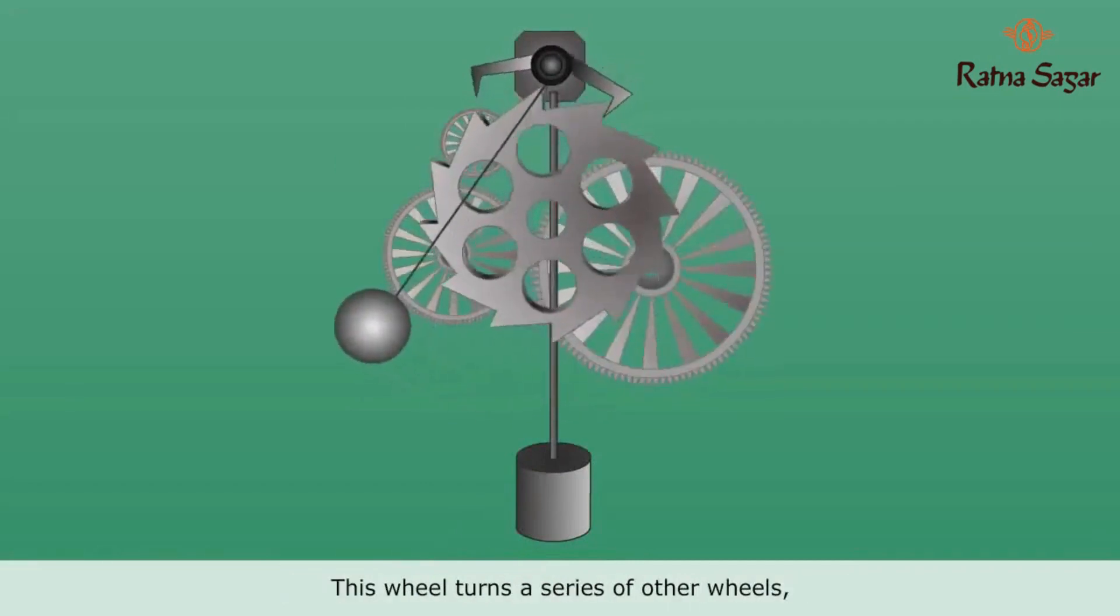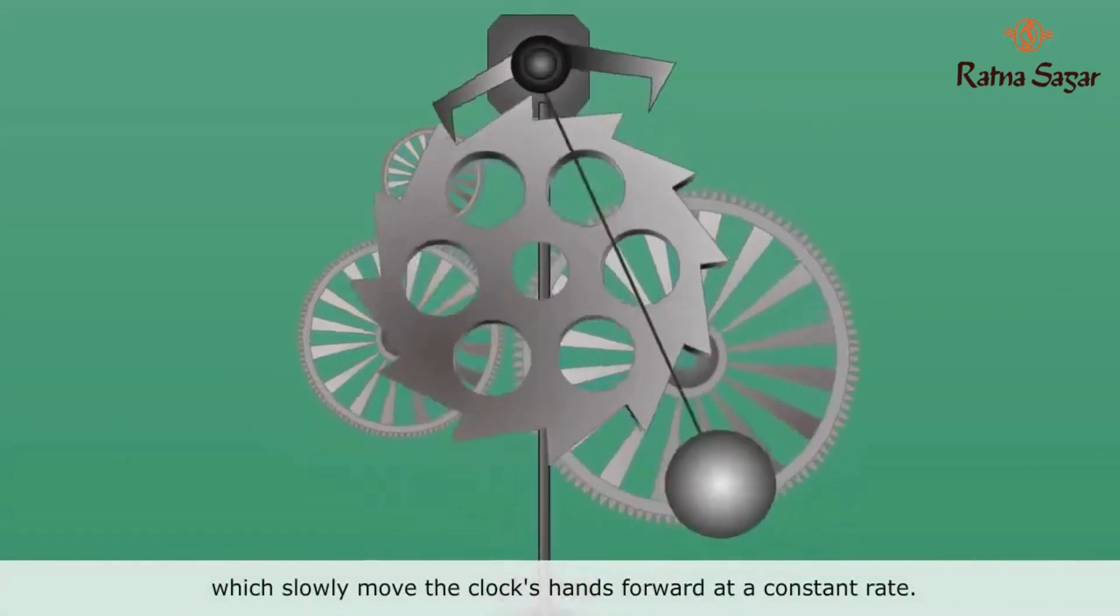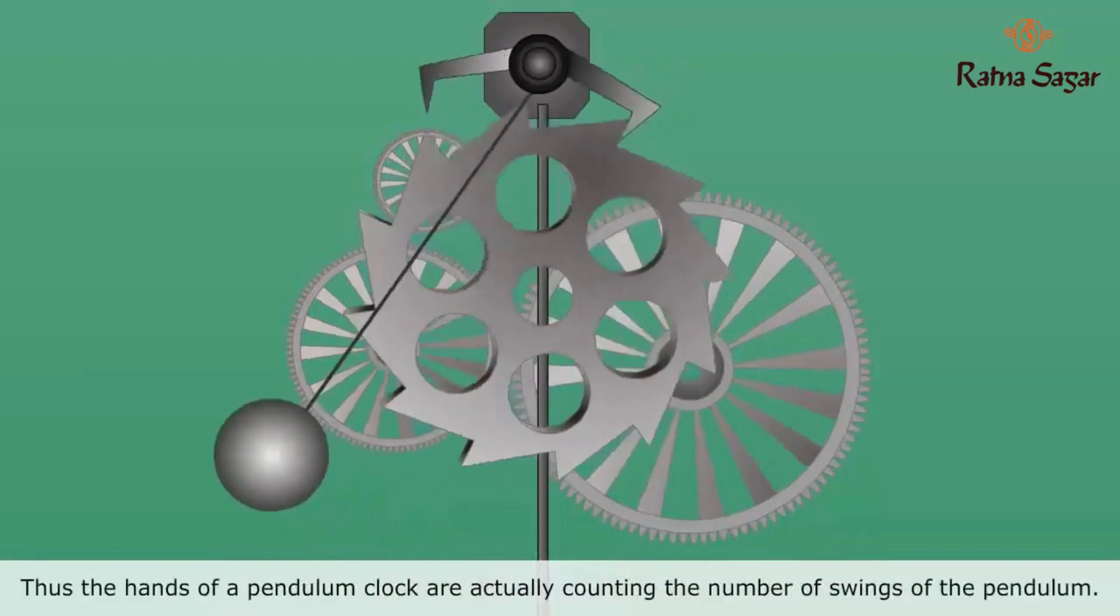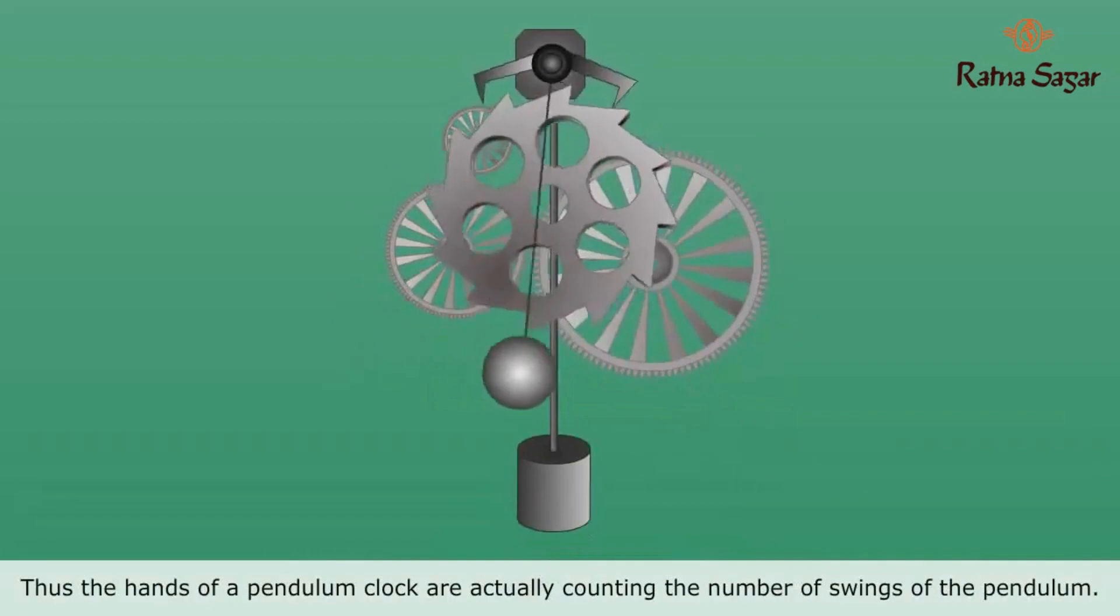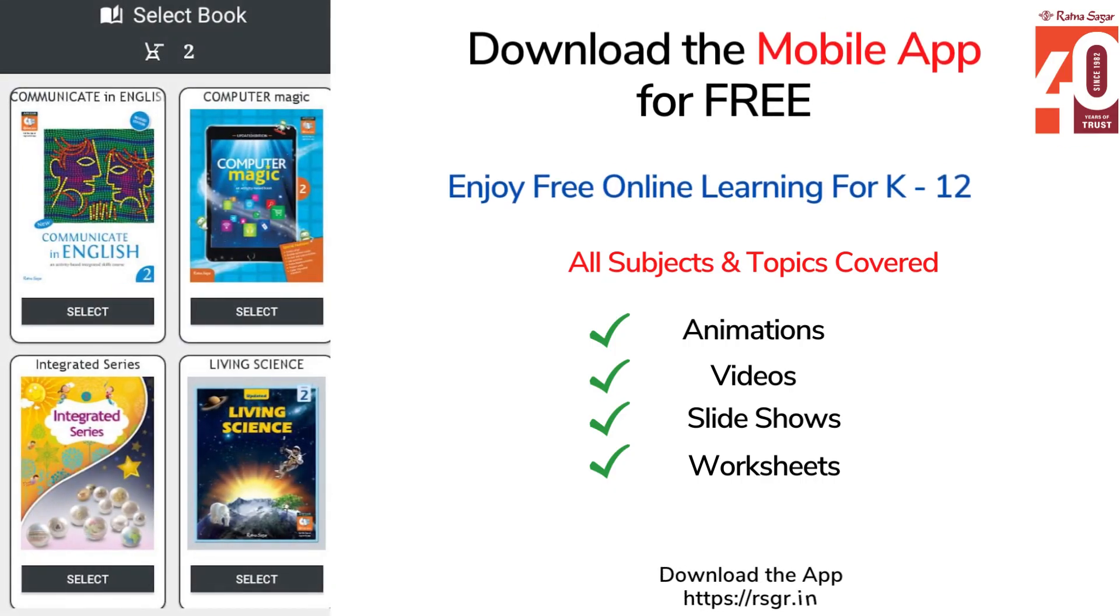This wheel turns a series of other wheels, which slowly move the clock's hands forward at a constant rate. Thus, the hands of a pendulum clock are actually counting the number of swings of the pendulum.